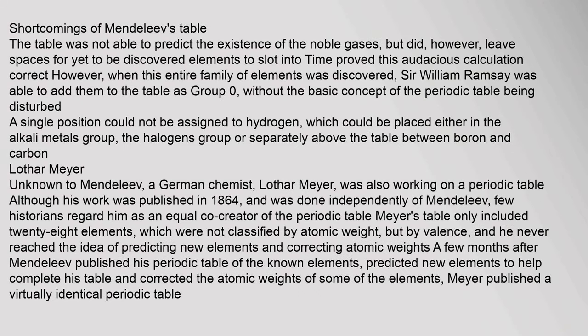Shortcomings of Mendeleev's table: the table was not able to predict the existence of the noble gases, but did leave spaces for yet-to-be-discovered elements. When this entire family of elements was discovered, Sir William Ramsay was able to add them to the table as group zero without disturbing the basic concept of the periodic table. A single position could not be assigned to hydrogen, which could be placed either in the alkali metals group, the halogens group, or separately above the table between boron and carbon.